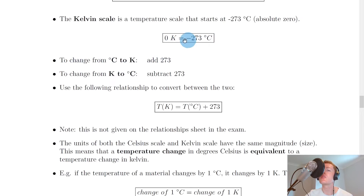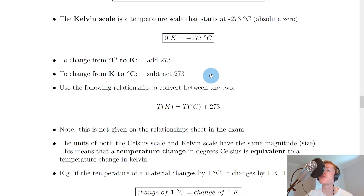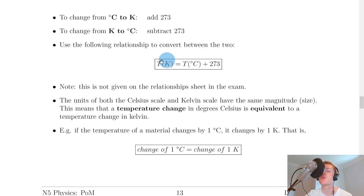Because of this equivalence, we can convert between Kelvin and degrees Celsius. You might see questions that give a temperature in degrees Celsius and ask you to convert to Kelvin, or vice versa. To change from degrees Celsius to Kelvin, you add 273 — this is mostly what you'd need to do in a question. To change from Kelvin back to degrees Celsius, you subtract 273 from your existing value. We can generalize this into a relationship.